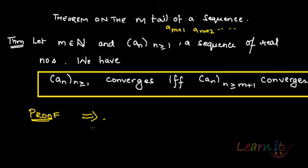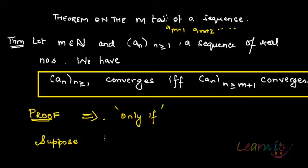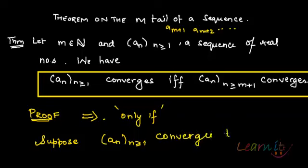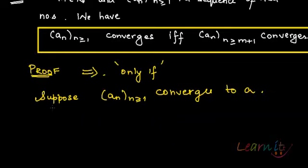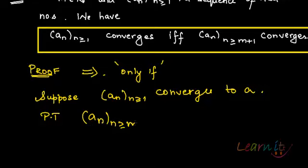First, the implication from LHS to RHS — the only-if part. We assume that a_n, where n is greater than or equal to 1, converges to some number a. We will prove that a_n where n starts from m+1 also converges to a.